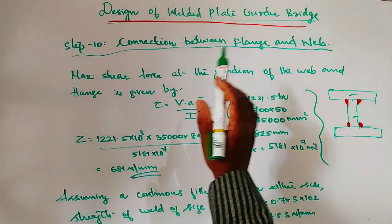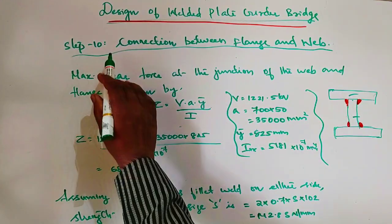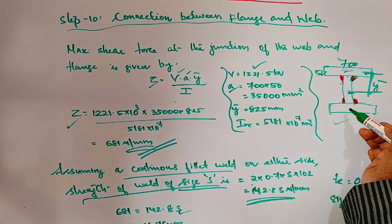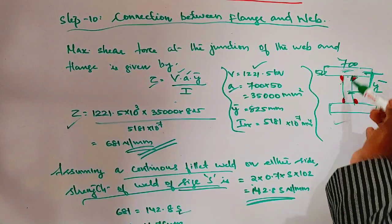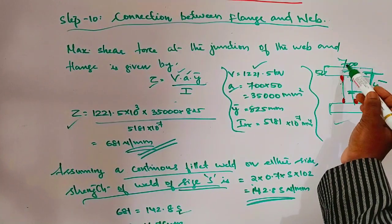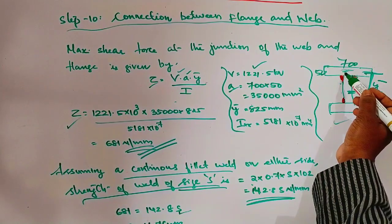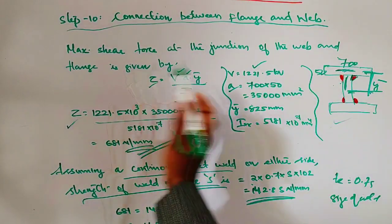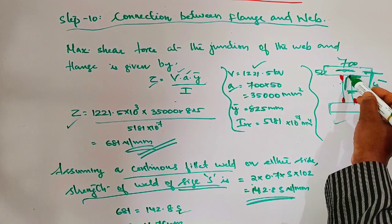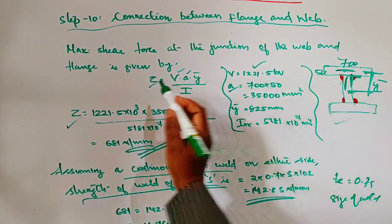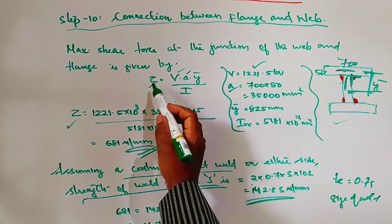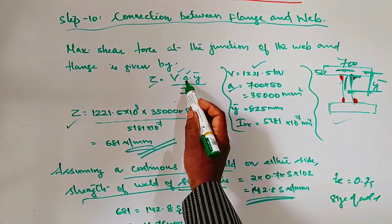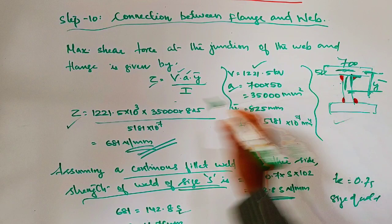Step 10: Connection between flange and web. This is the plate girder figure — this is the flange and this is the web. The flange size is 700 by 50, and we connect the flange to the web using fillet weld on either side. The maximum shear force at the junction of the web and flange is given by: shear force q = V·A·ȳ / I, where V is the shear force, A is the area of the flange, ȳ is the centroidal distance, and I is I_xx.